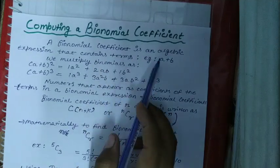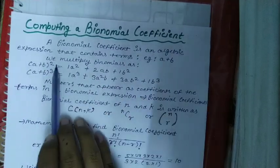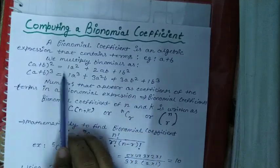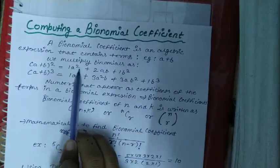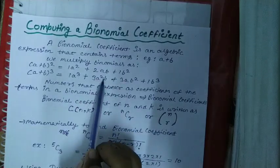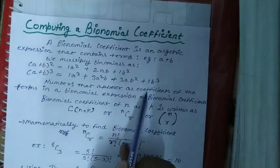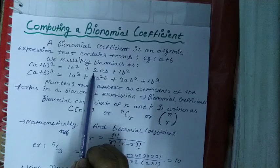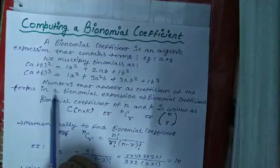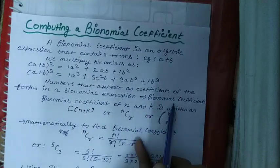A binomial coefficient is an algebraic expression that contains terms A plus B. We multiply binomials as A plus B squared and A plus B cubed. A plus B squared gives 1A squared, 2AB, 1B squared. A plus B cubed gives 1A cubed, 3A squared B, 3AB squared, 1B cubed. The numbers that appear as coefficients — 1, 2, 1 and 1, 3, 3, 1 — of the terms in a binomial expression are called binomial coefficients.